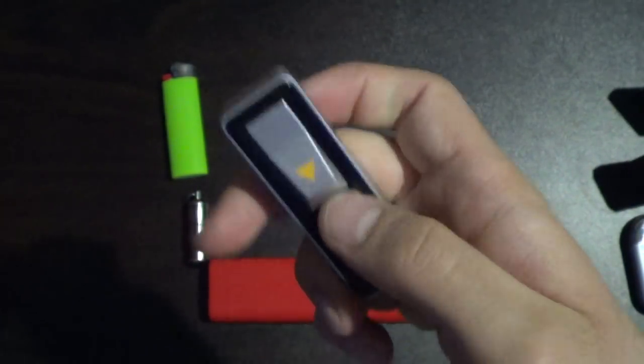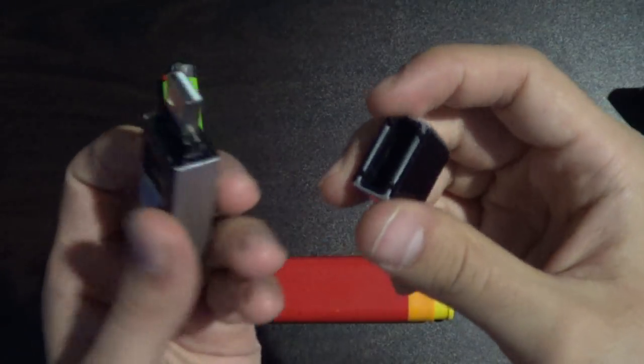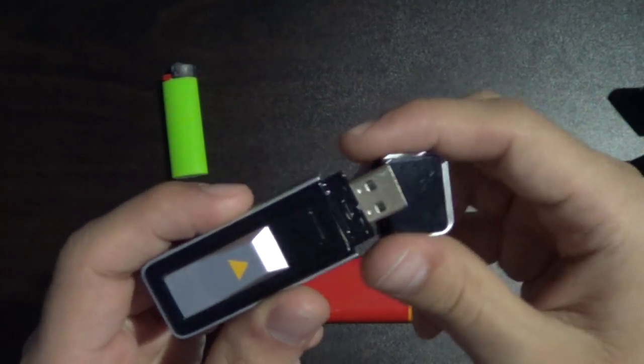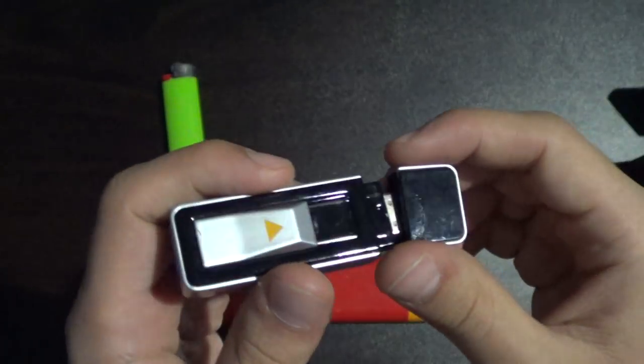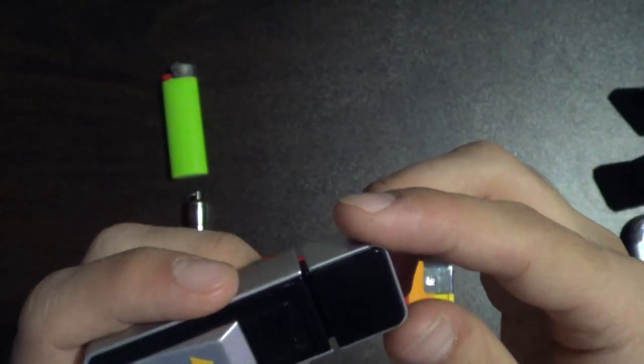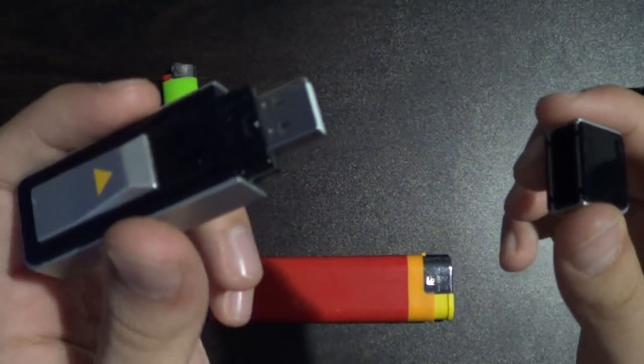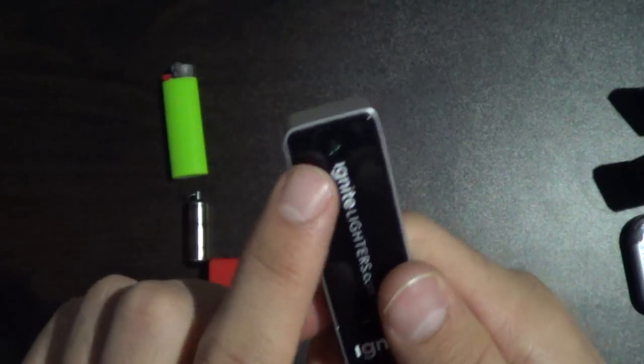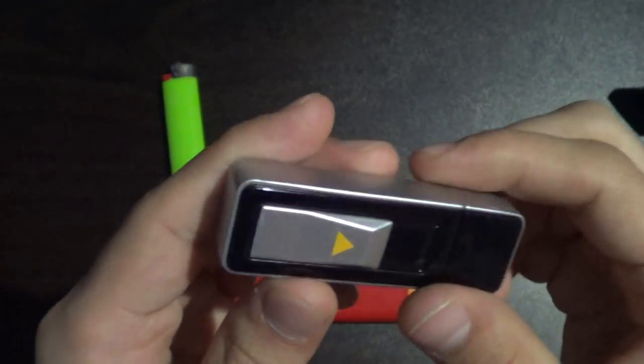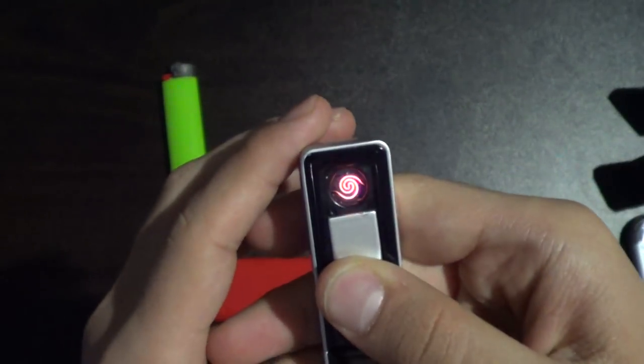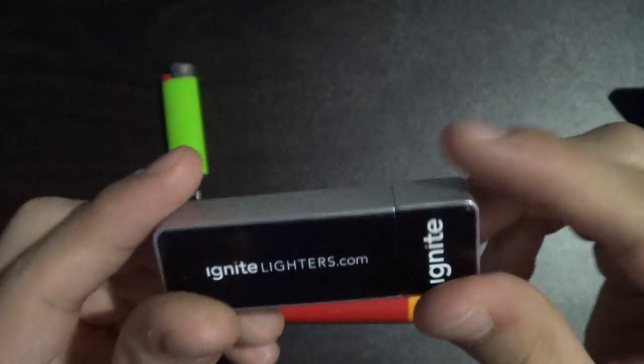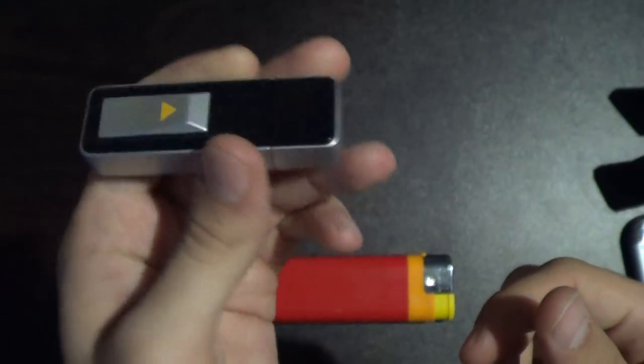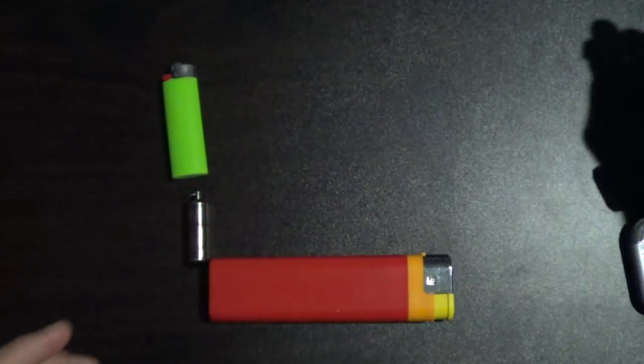And it always works as long as it's charged. So it charges from USB. Just plug it into a USB port either on your computer or a wall power adapter, and this light will turn on, and then it'll turn off when it's done charging. So super easy, super simple lighter to use. It even just looks like a USB flash drive. So that's a pretty cool one.